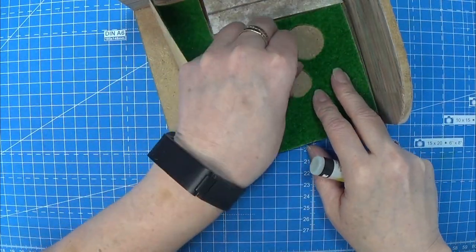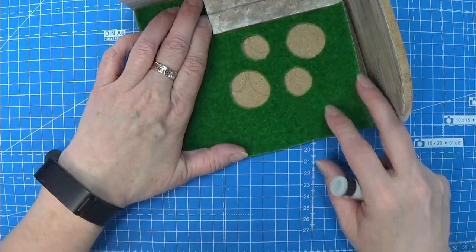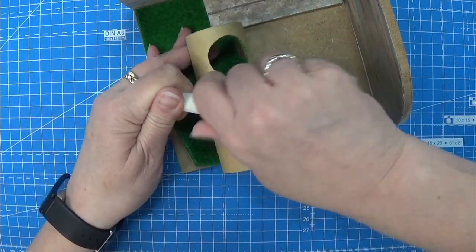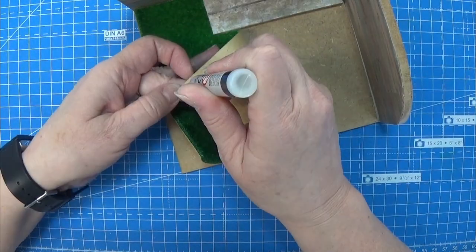Then I took my glue and I glued this piece of grass down onto my scenery, making sure that everything is glued really well in place.